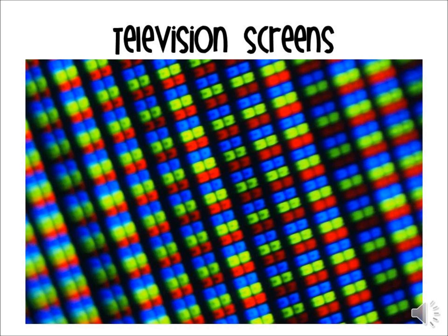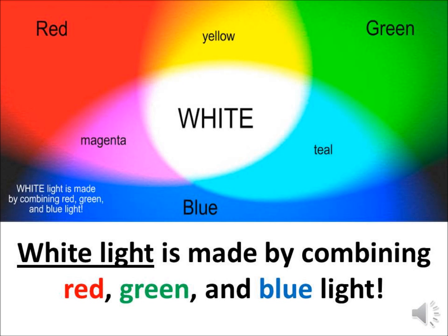If a part of the screen should be purple, then the blue and the red will come on. This slide illustrates this idea further. In the upper left corner you have a red light, in the upper right you have green, and across the bottom is the blue light. Where the red and the green light overlap, you get yellow. Where the green and the blue light overlap, you get a teal color. Where the red and the blue overlap, you get magenta — that's a purplish pink. And where all three of them overlap, that is where you get white light.